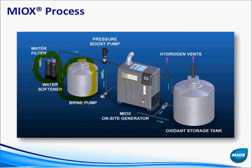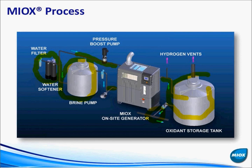Part of the stream goes into a brine tank where we make up a saturated brine, and part goes into the back of the generator. The generator automatically combines and blends those two streams at the right ratio, controls the electrolytic process, and produces an oxidant that goes into the oxidant tank downstream. That oxidant is then dosed into your application — for drinking water, for example, one pump may handle pre-treatment before a filter and another for final disinfection.